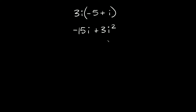Now one thing we can do here is actually simplify this i squared. Why can we simplify i squared? Well, remember the definition of i is that it's equal to the square root of negative 1. So if you square i, we're squaring the square root of negative 1. What's that equal to? Well that's just equal to negative 1. So i squared is equal to simply negative 1.